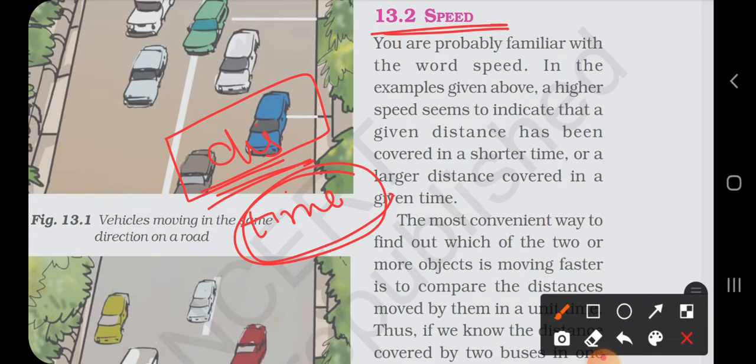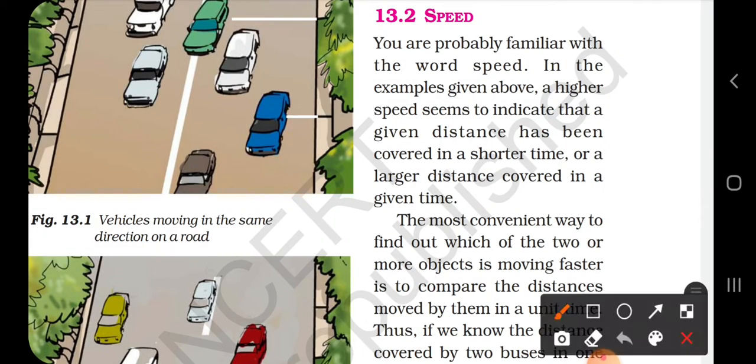Speed is measured in two units. One is meter per second, and the other is kilometer per hour.